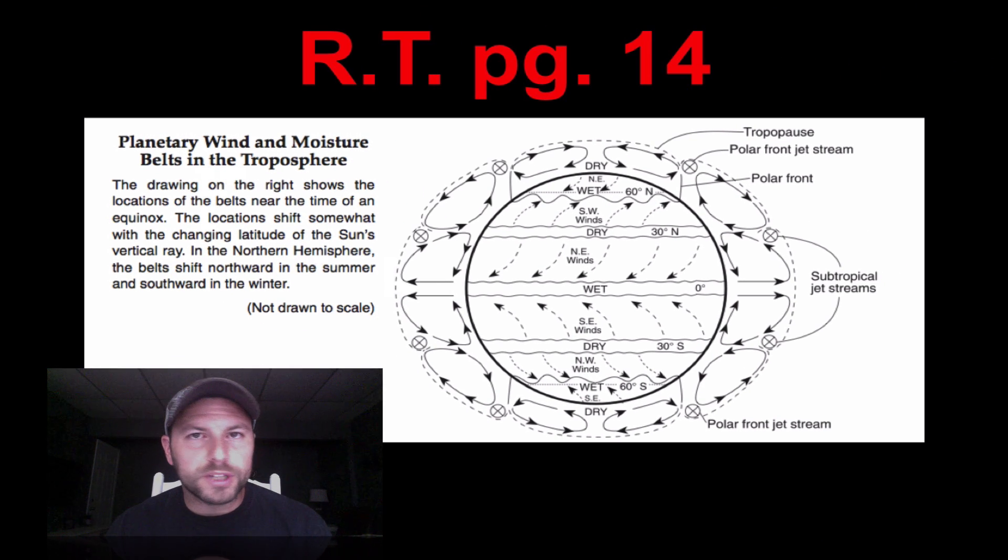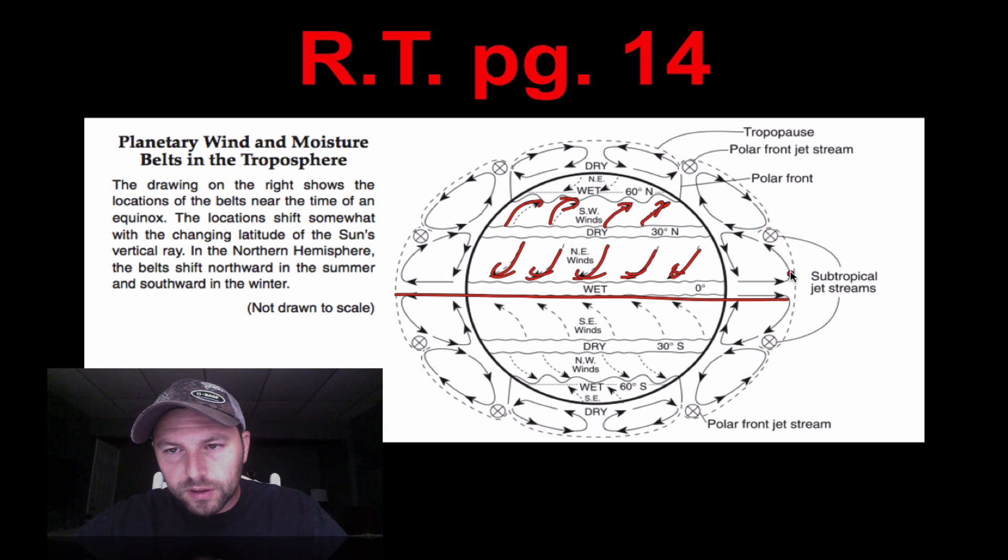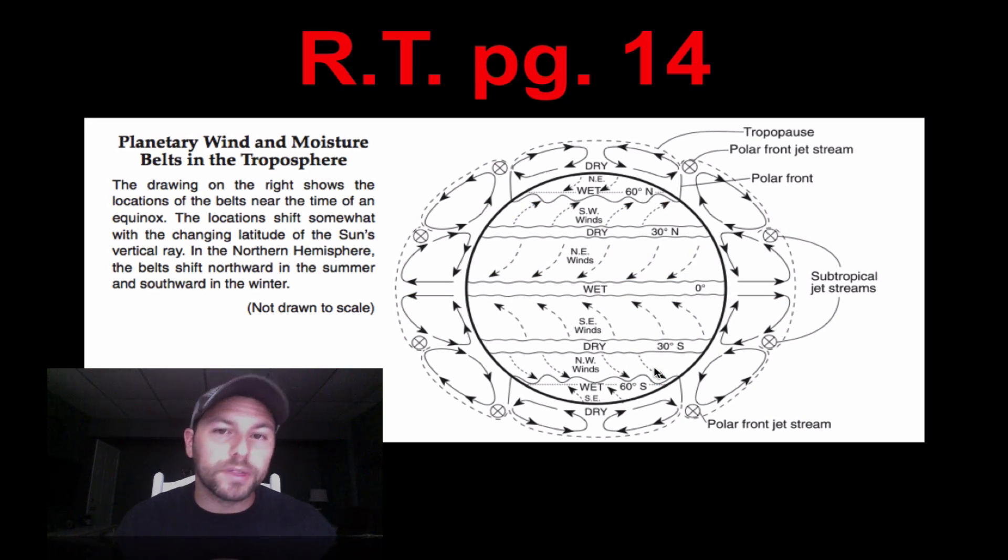If we look at page 14 in our Earth Science Reference Table, it will also show us this deflection. Notice that all of our planetary winds have this deflection to the right, and the same with here. Anything in the northern hemisphere, so basically here above the line is to the right. Anything below this line or south of the equator is to the left, which you can see here. So remember, page 14 can help you with this.